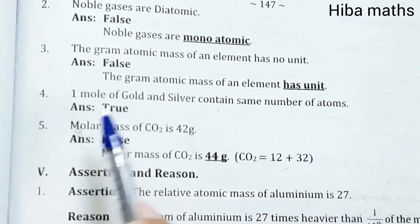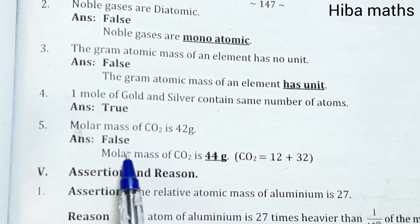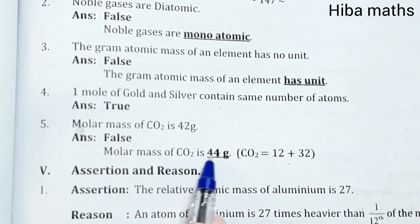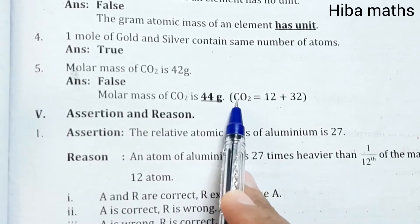One mole of gold and silver contain same number of atoms - True. Molar mass of CO2 is 42 grams - False. Molar mass of CO2 is 44 grams. In a carbon molecule, oxygen weighs 16 to 32, and 22 + 1 = 42 total.